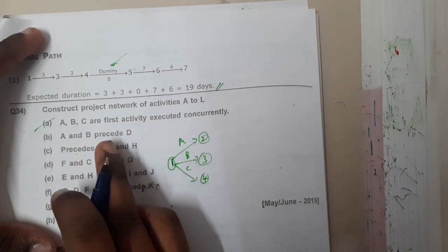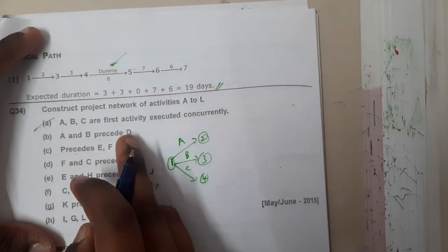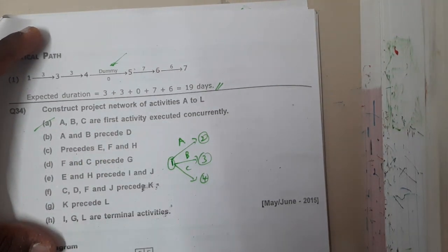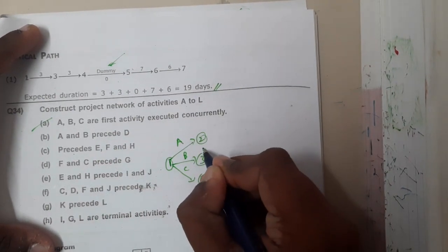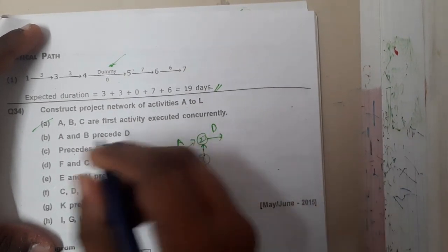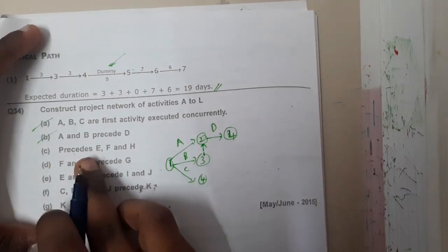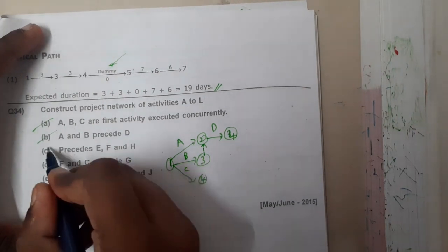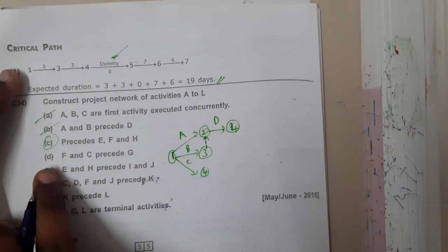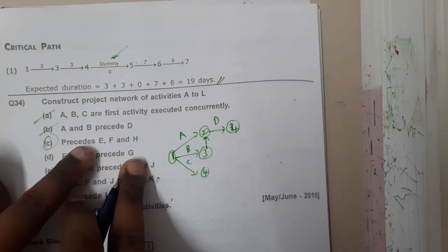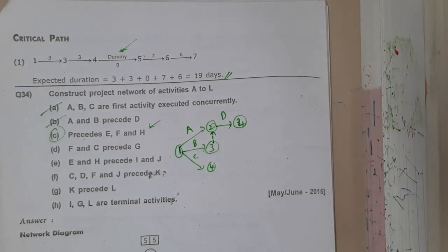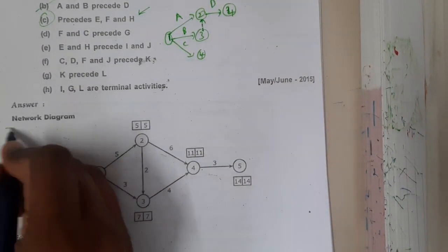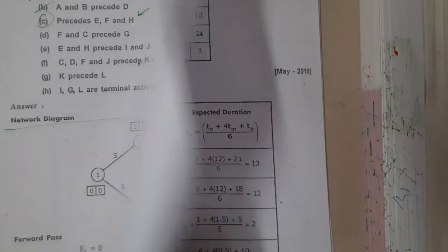A, B, and C are concurrent, so I assign them nodes two, three, and four. Next, A and B precede D, meaning combining A and B leads to D. The statement says something precedes E, F, and H — but the statements are not very clear. D, F, and C precede G. Since every subsequent statement depends on the earlier ones and the statements are unclear, let us move on. If a clearer question comes up we will solve it.